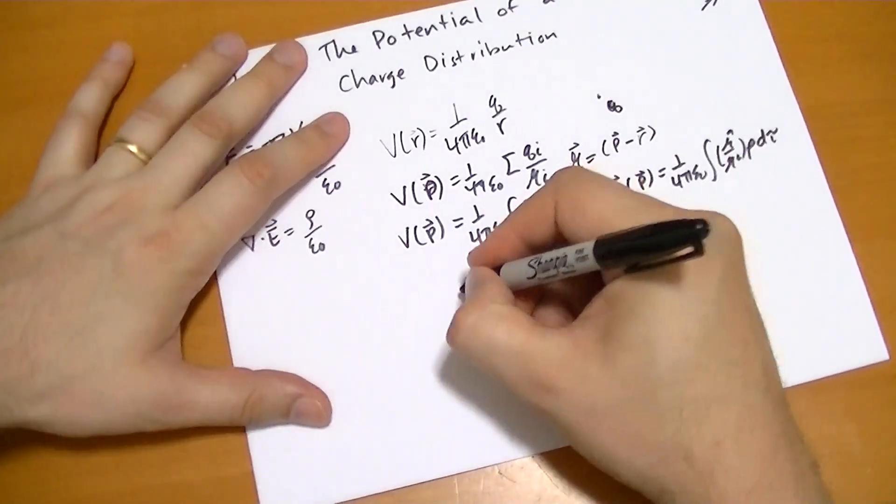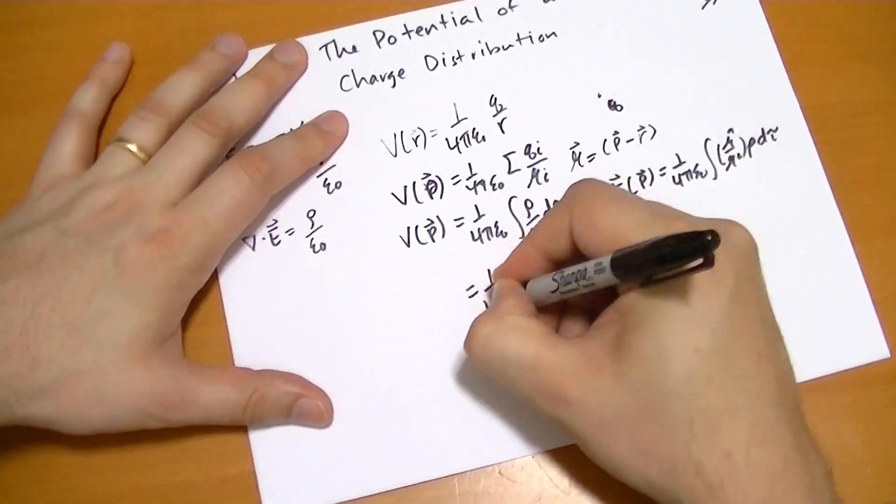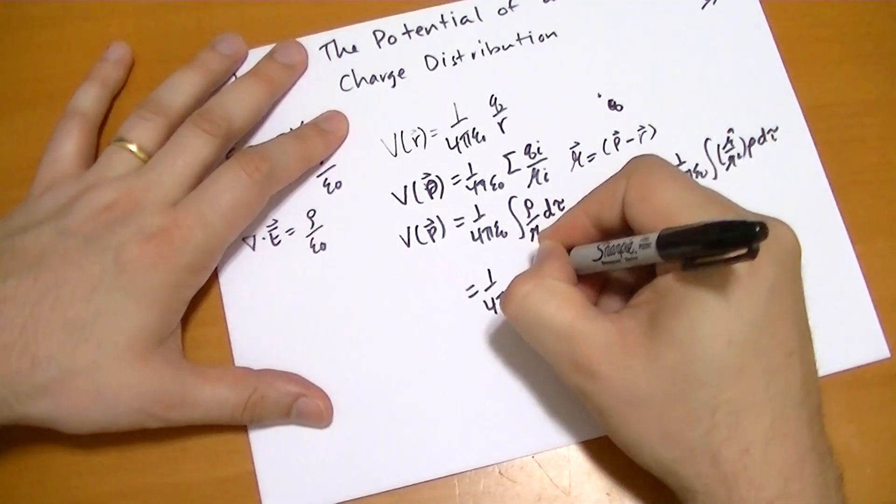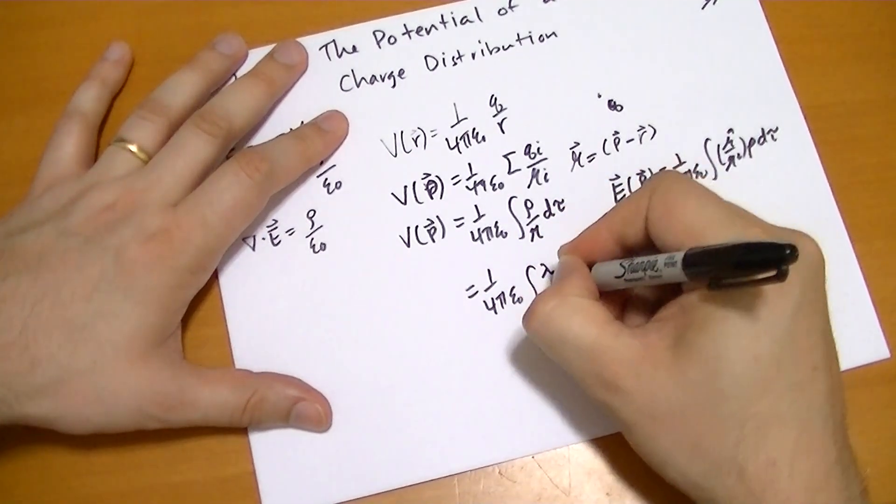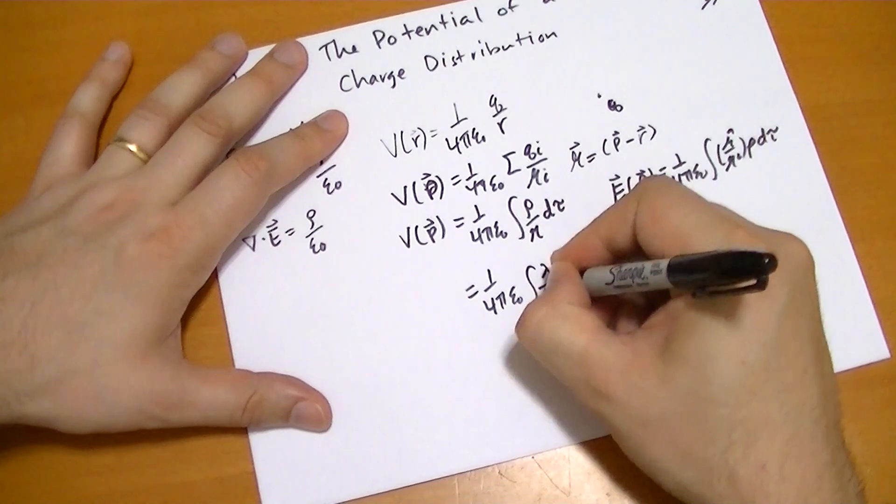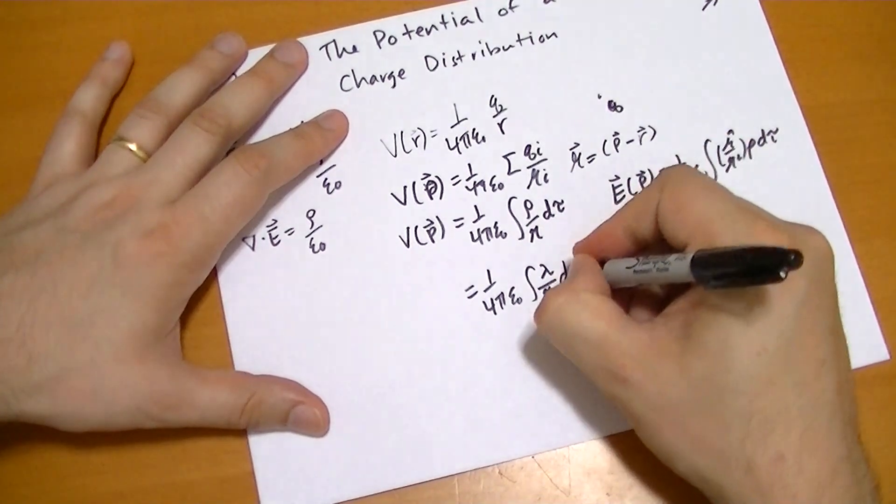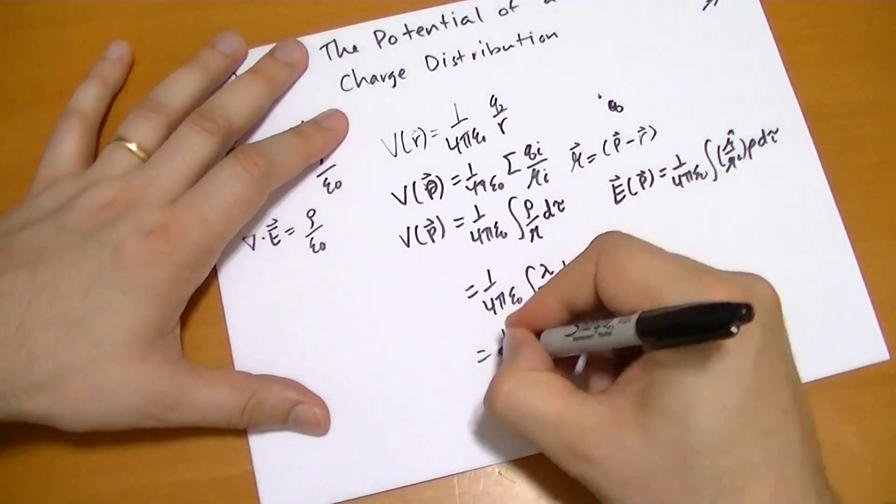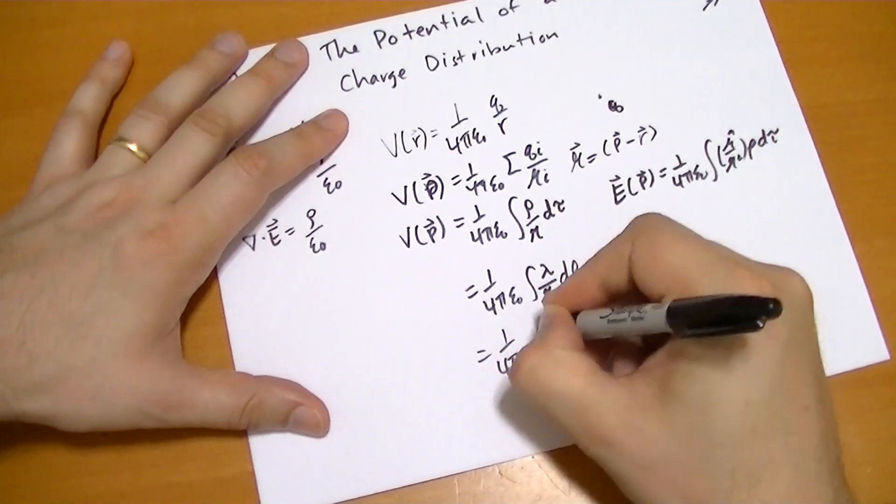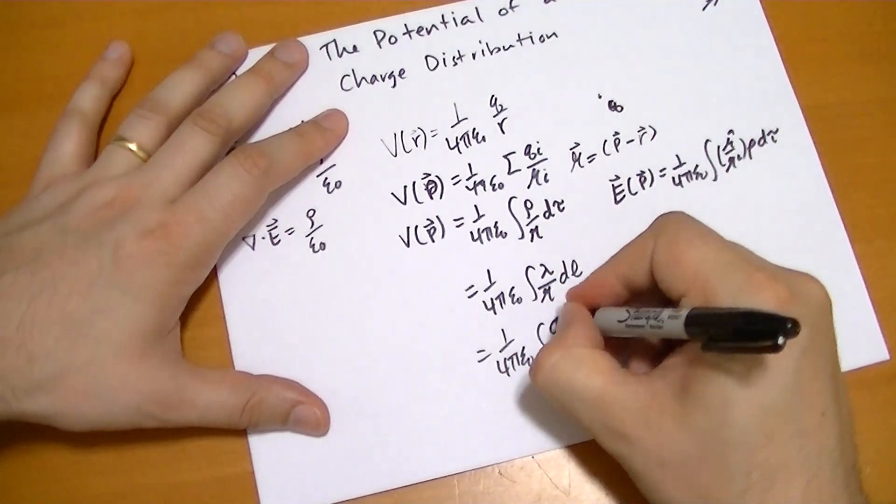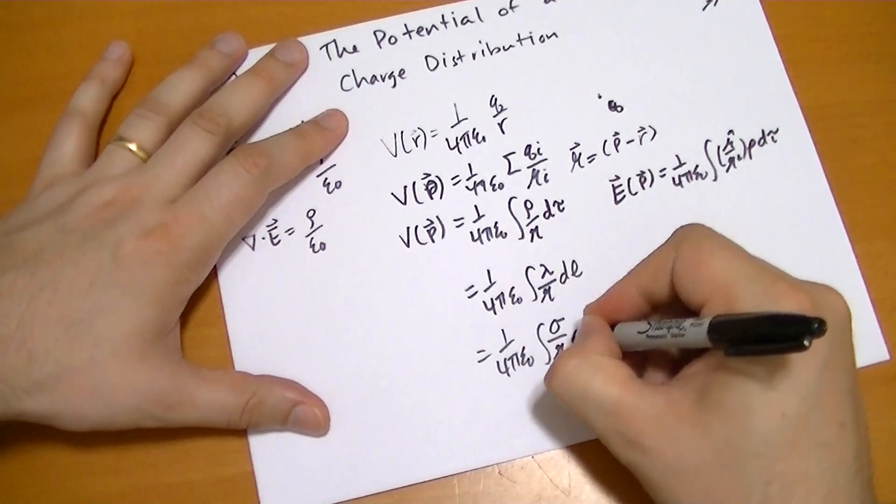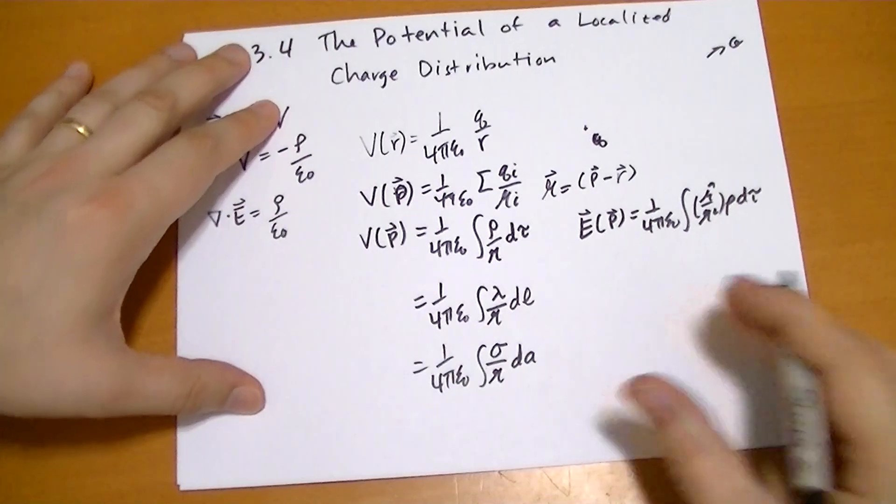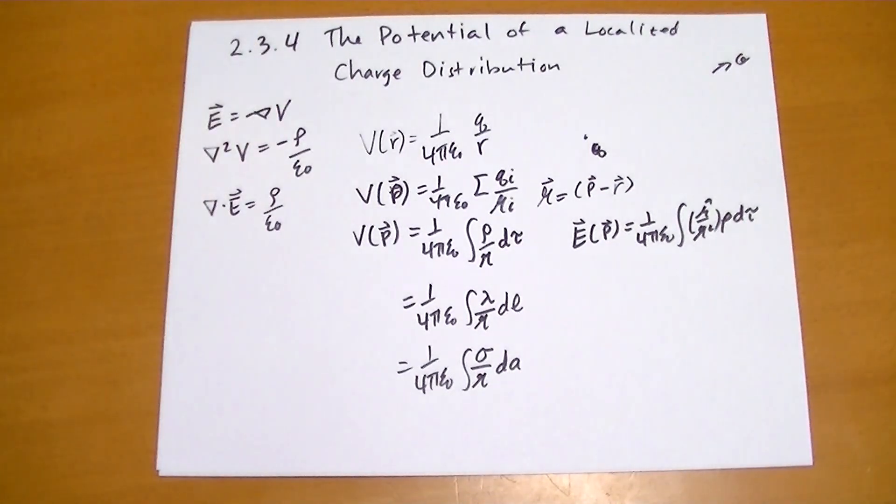And likewise, you can figure out that for a line charge, it would be 1 over 4 pi epsilon naught the integral of that line charge density over the distance dL. And for a surface charge, of course, the parallel is the rather simple sigma over R dA. So now we know how to calculate the potential given a certain charge density.